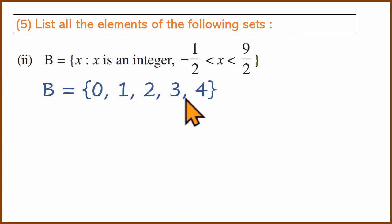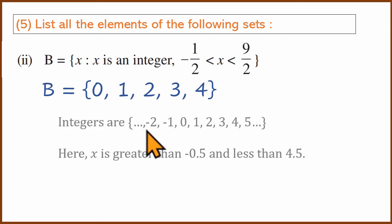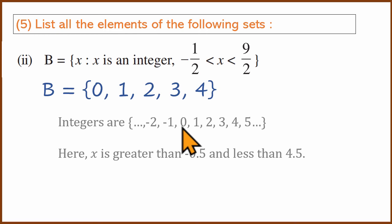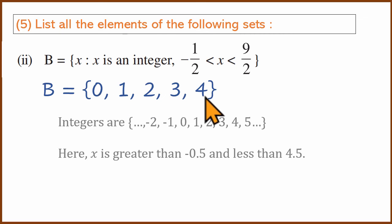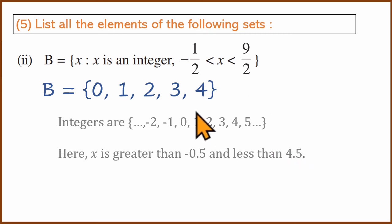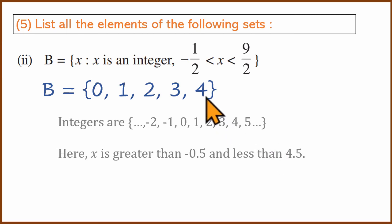The correct answer for the integer set is 0 to 4. The first integer greater than −0.5 is 0, because −1 is less than −0.5. The last one is 4, since 4 is greater than −0.5 and less than 4.5, while 5 is greater than 4.5.